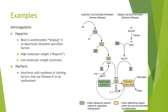Our last example of anticoagulants is dabigatran or Pradaxa. Pradaxa does not inhibit synthesis of factors — it actually inhibits the factor itself. Pradaxa focuses on thrombin, which is the factor right before fibrinogen turns into fibrin.